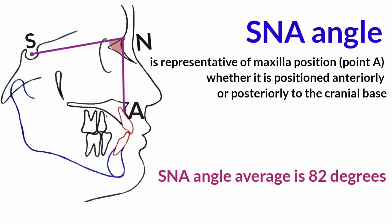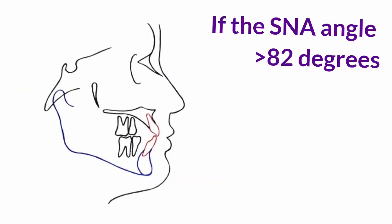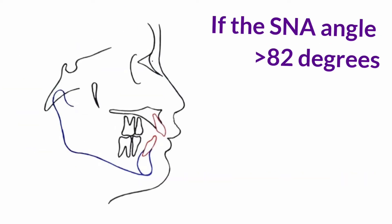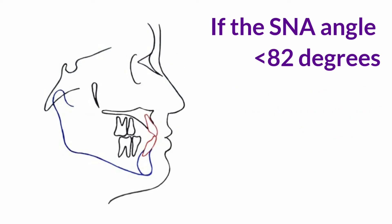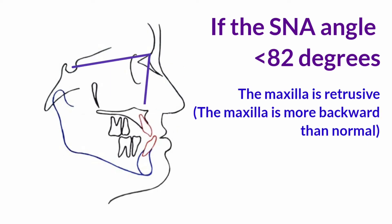The SNA angle average is 82 degrees. If the SNA angle is greater than 82 degrees, the maxilla is protrusive — the maxilla is more forward than normal. If the SNA angle is less than 82 degrees, the maxilla is retrusive — the maxilla is more backward than normal.